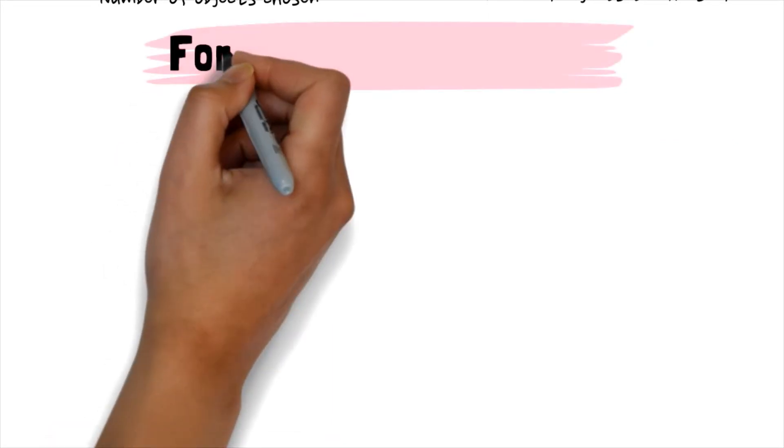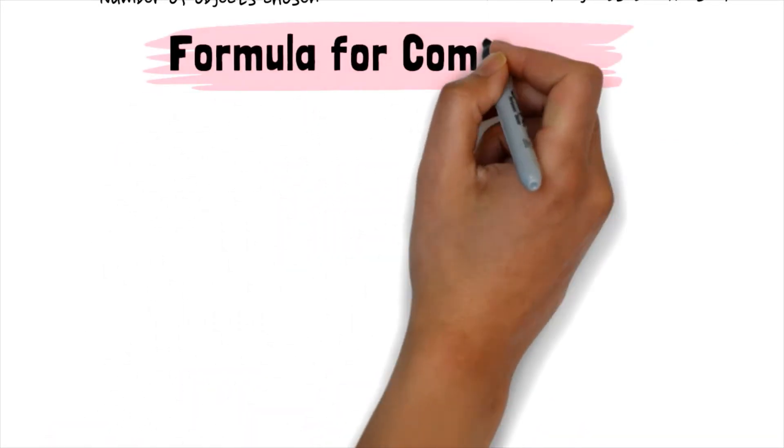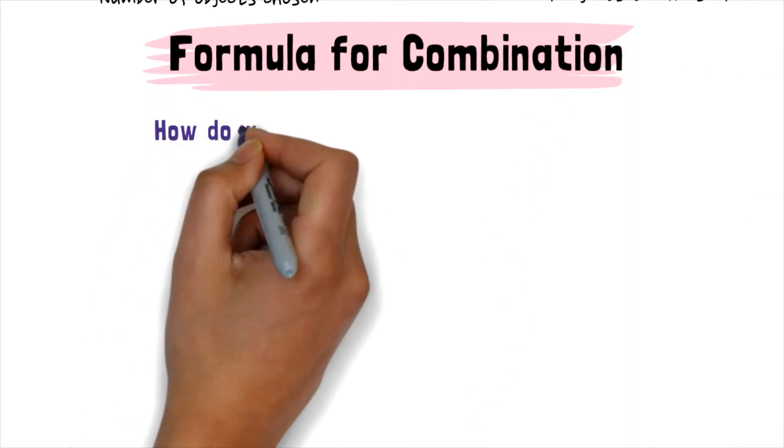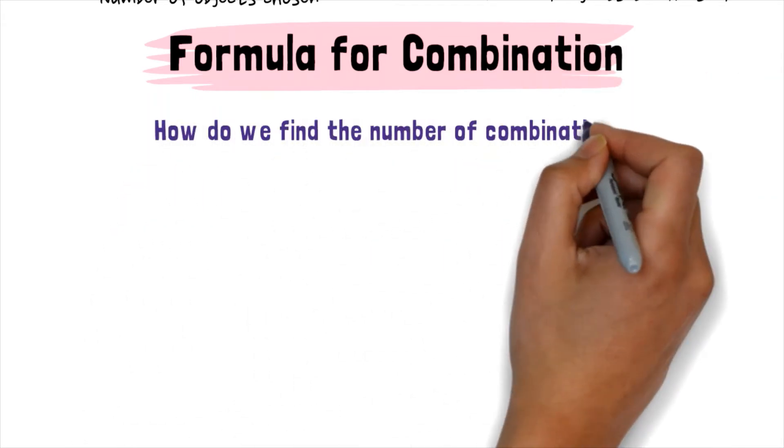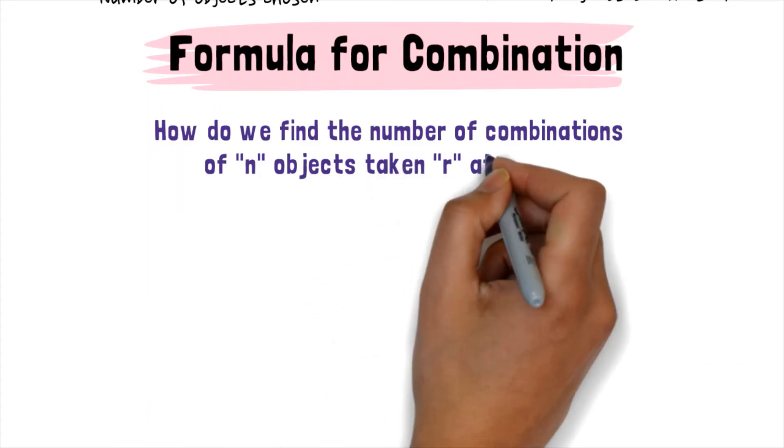Now, let us derive the formula for the combination. How do we find the number of combinations of N objects taken R at a time?